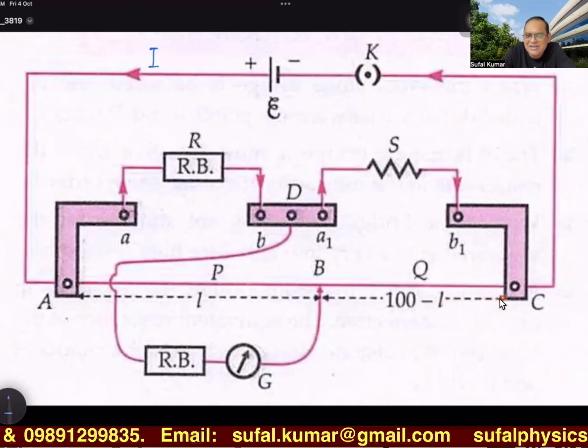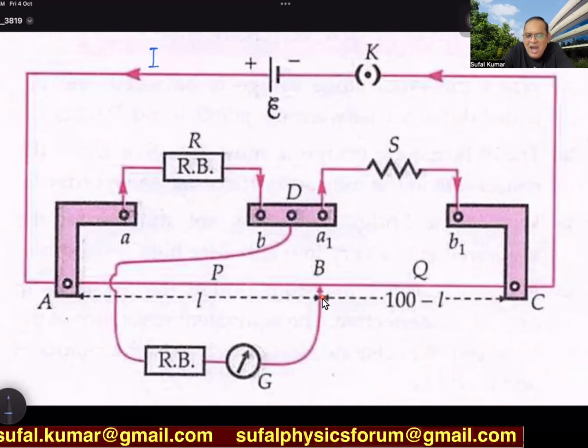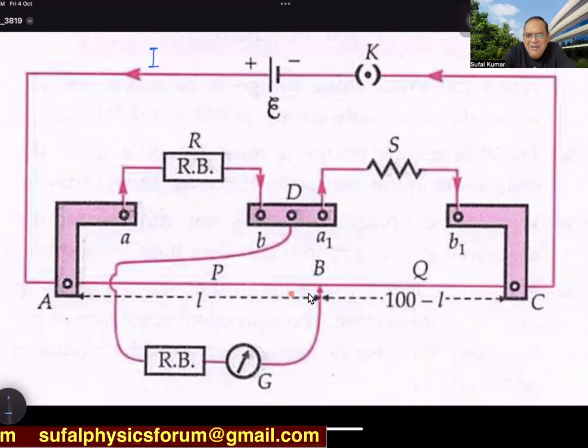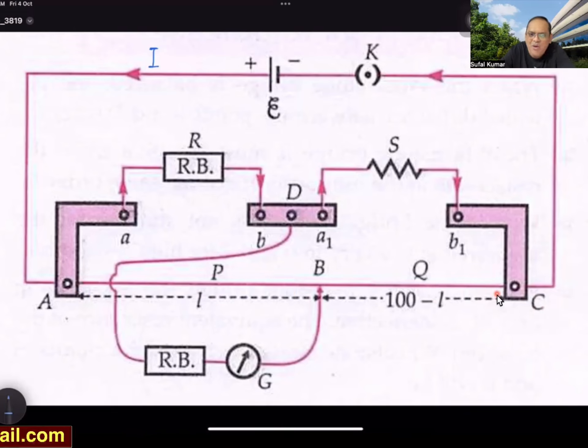If you proceed, then this point is jockey, which is a sliding thing. If you keep sliding in the current mode, there is one point in the process of sliding where jockey will acquire null point. At null point, galvanometer shows no deflection, that means VB - VD = 0.